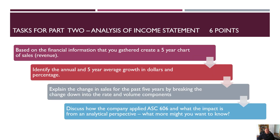Part two, analysis of the income statement, is worth six points. Based on the information gathered, create a five-year chart of sales revenue. Identify the annual and five-year average growth in both dollars and percent. Explain the change in sales for the past five years by breaking the change down into rate and volume components. Then discuss how the company applied ASC 606 and what the impact is from our perspective as analysts. Get this right and you will see so many things follow — the real key here is breaking the change in sales into rate and volume components.